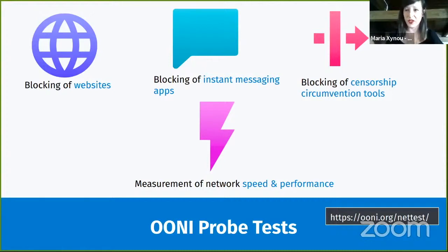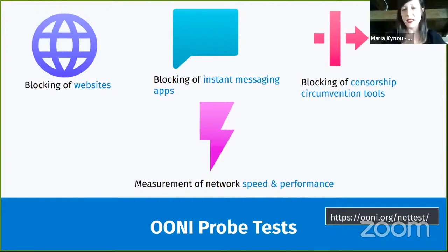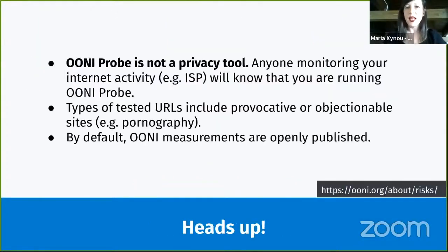A common use case of our app is to understand the performance of a network, and if analyzed in bulk, this data can potentially be useful for examining cases of throttling. As a heads up, I should highlight that OONI Probe is an investigatory tool — the app includes tests specifically designed to expose censorship, so in its nature it is a tool for investigations.